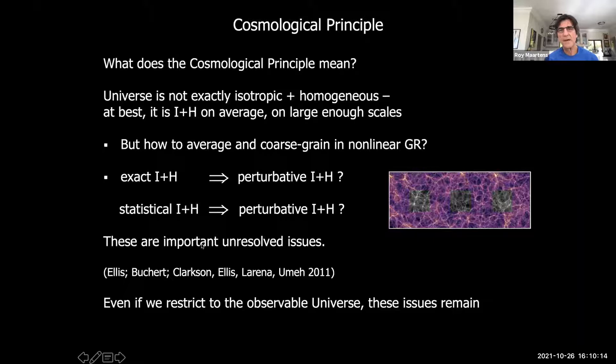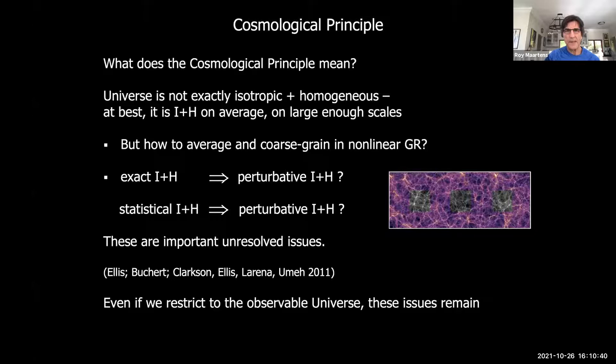The people who have gone into these issues of averaging in GR include principally George Ellis, Thomas Buchert, and others including Chris Clarkson who will be speaking later. Even if we restrict ourselves to the observable universe, as Alexis Starobinsky was saying yesterday, these issues do not go away — they remain.